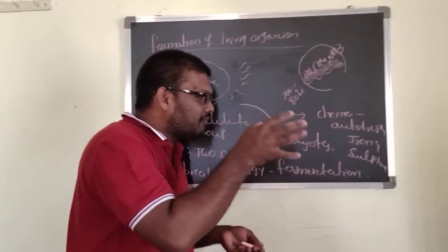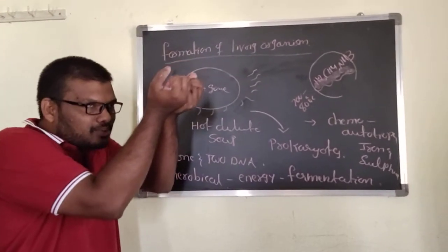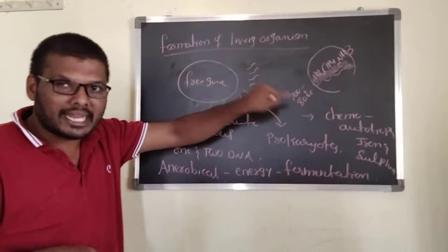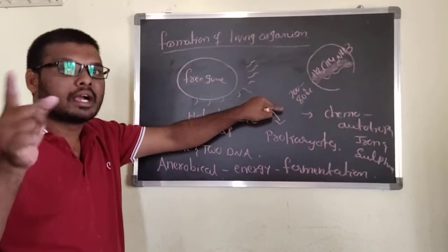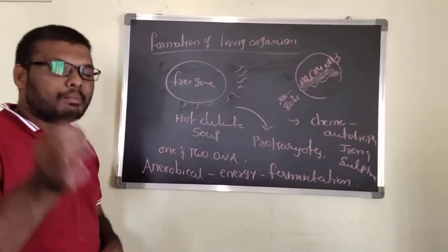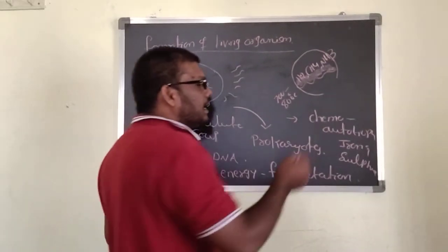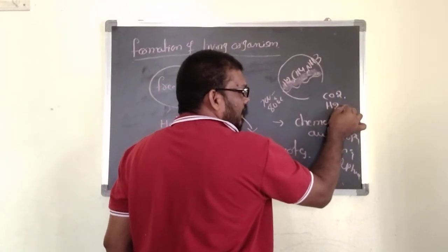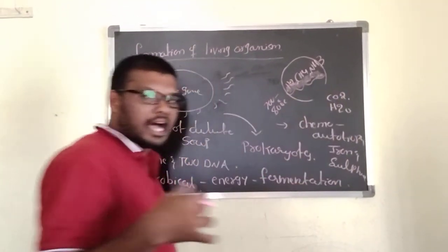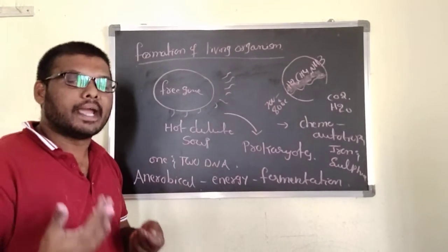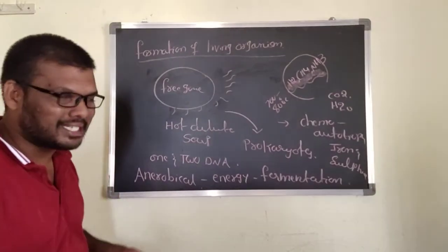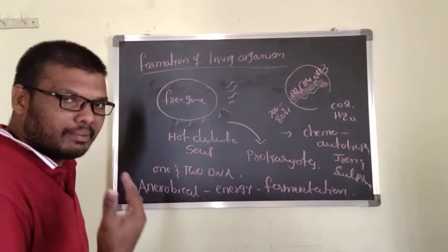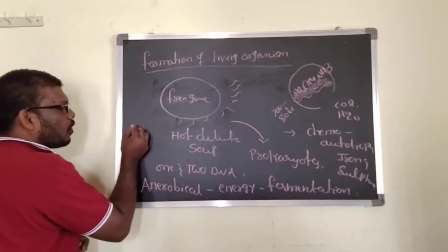By using this enzyme, first it can absorb carbon dioxide into the body. By using that carbohydrate-synthesizing enzyme, it can produce carbohydrates under water and also get sugar molecules. After that it turns to chlorophyll bacteria.